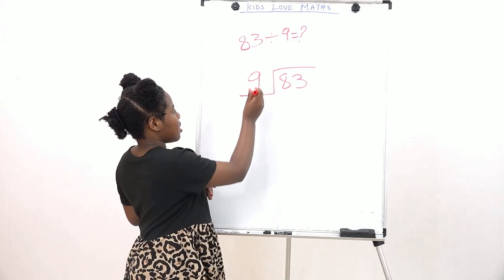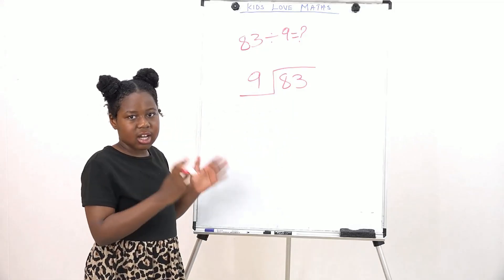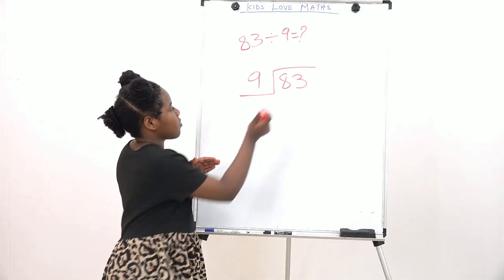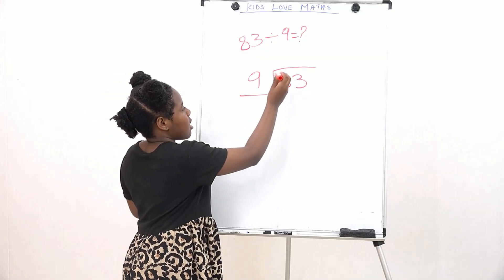Like this. 9 divided by 8, you cannot do that because 9 is bigger than 8. Now you have to add the other number and that will become 83.